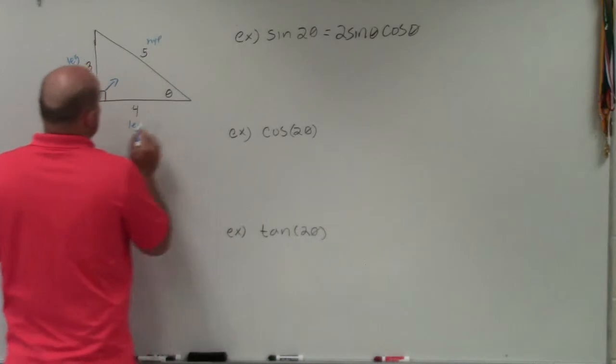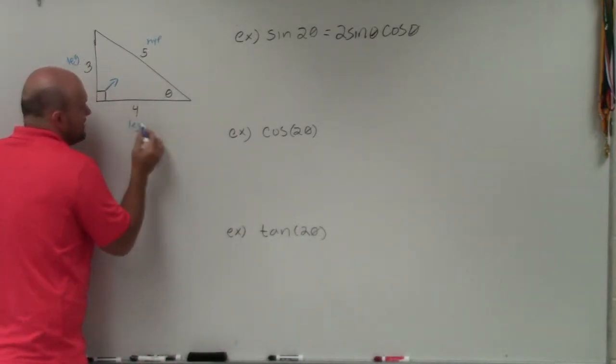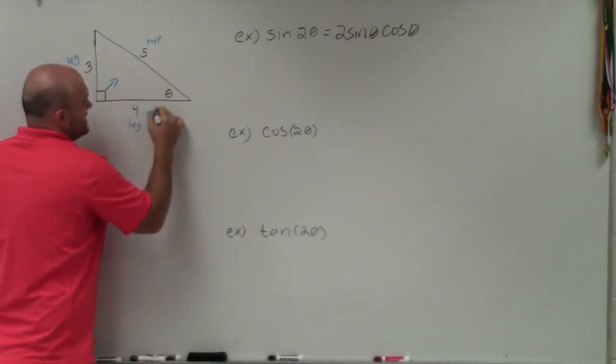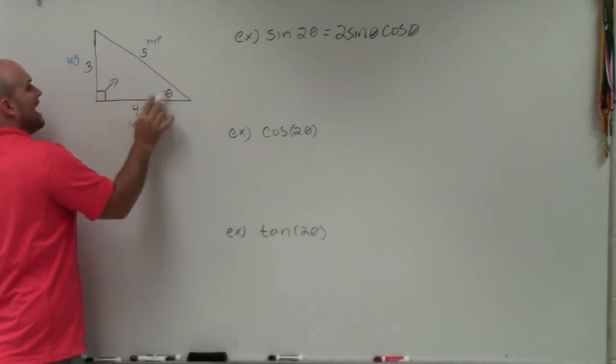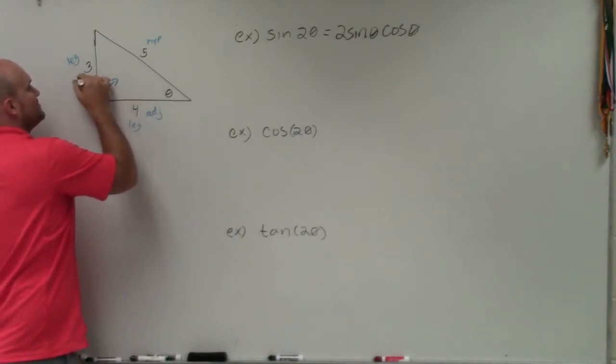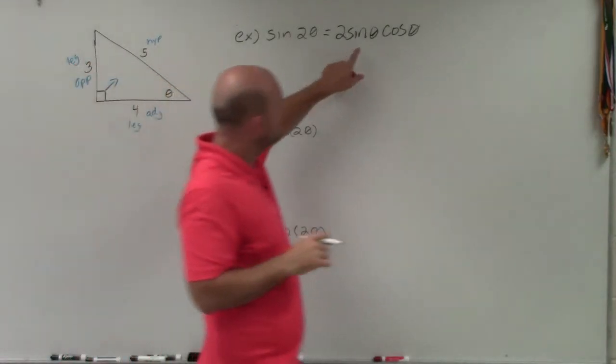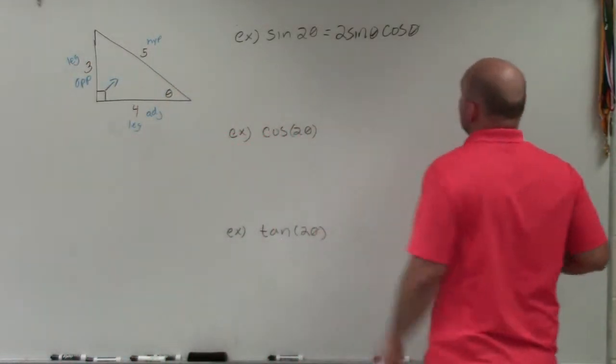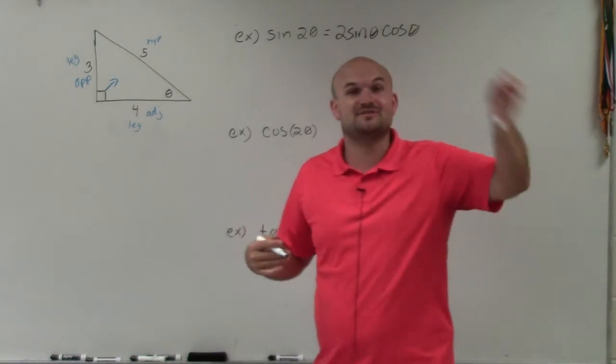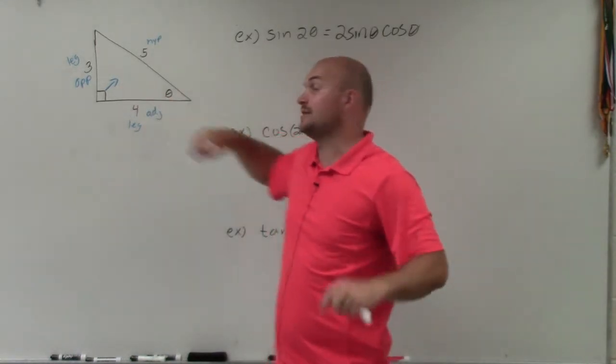Just always remember that the side length that's between the 90 degree angle and theta is called our adjacent leg. And the side that's opposite of theta is what we call our opposite side. So remember, when evaluating for this, sine of theta, sine represents opposite over hypotenuse of a right triangle.